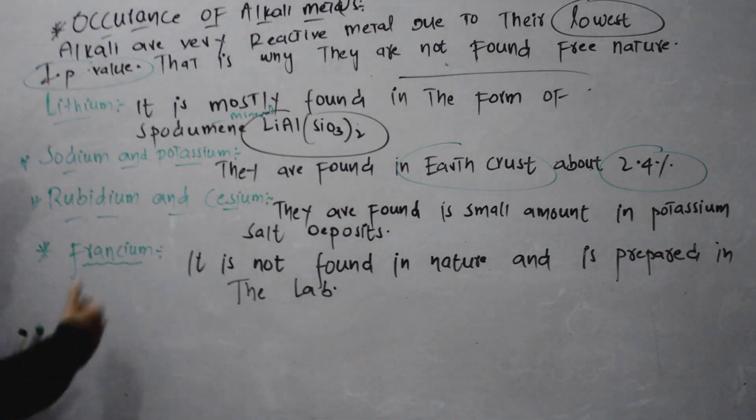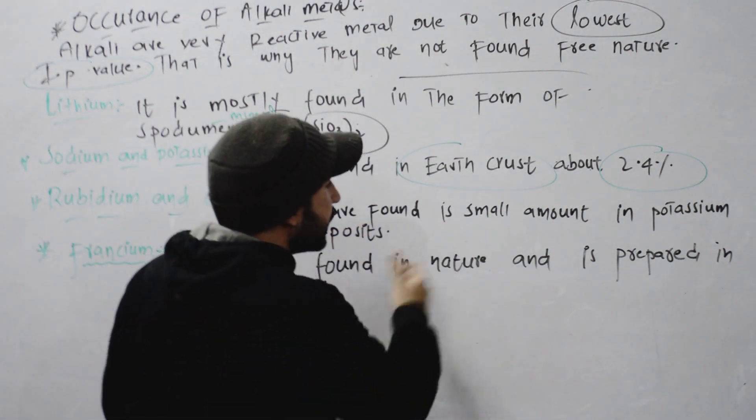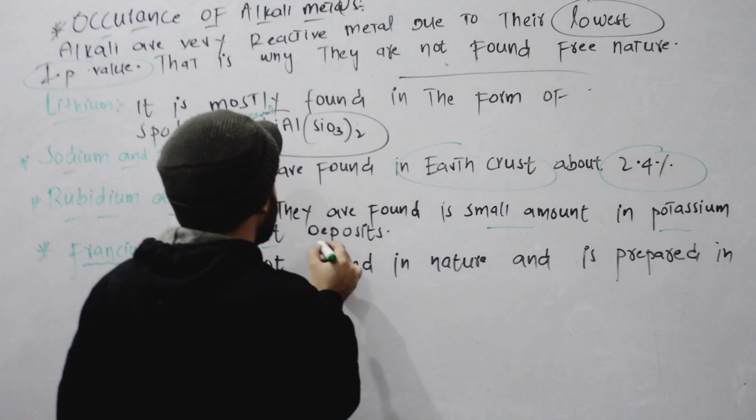Next, rubidium and cesium are found in small amounts in potassium sand deposits.